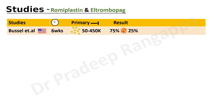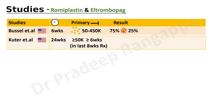There are around eight studies; I'll cover six. Most appear to be sponsored studies from the US and Japan. Looking at romiplostim studies: Bussel et al. from the US — a six-week study — had a primary endpoint of increasing platelet count from 50,000 up to 450,000. Romiplostim achieved a 75% response rate compared to 25% in the placebo group.